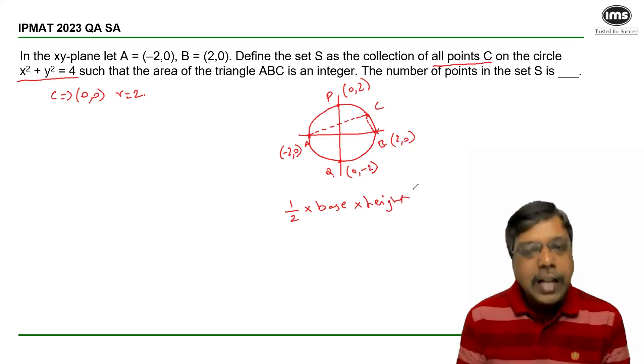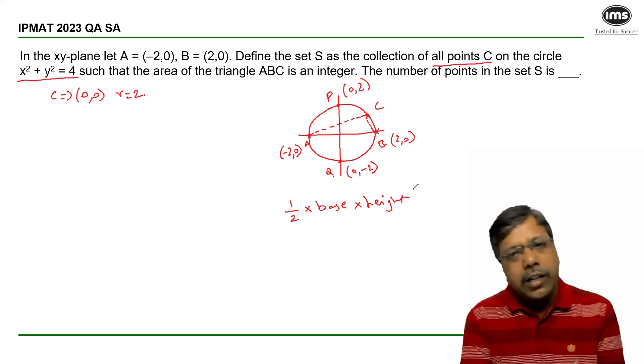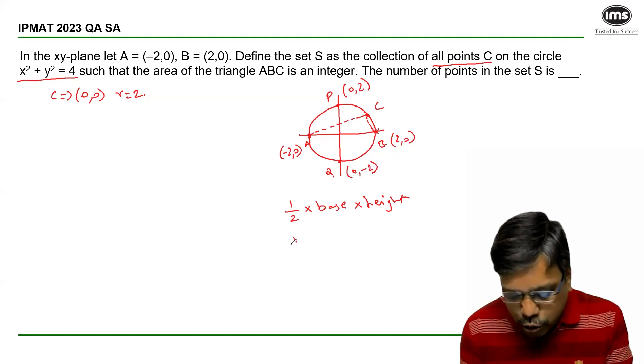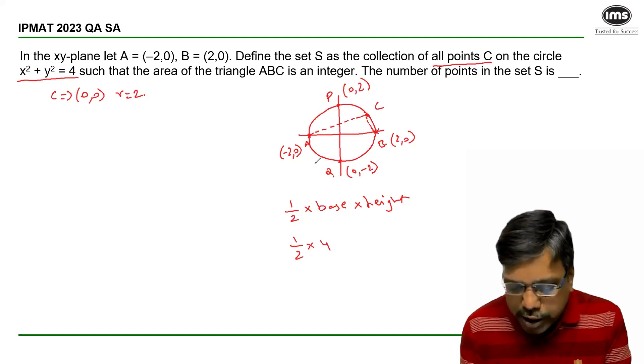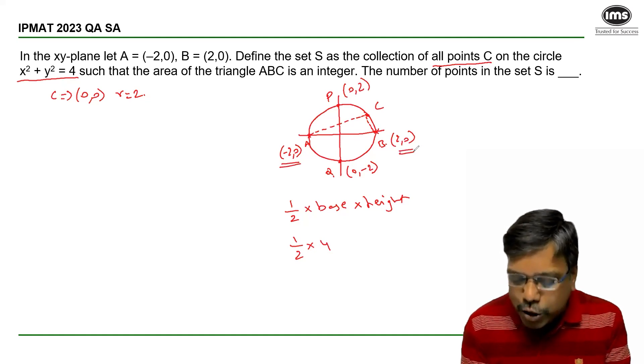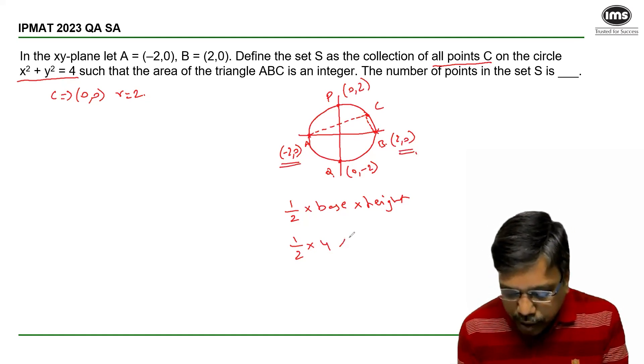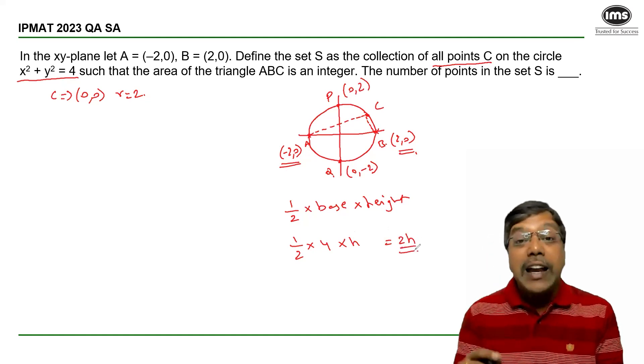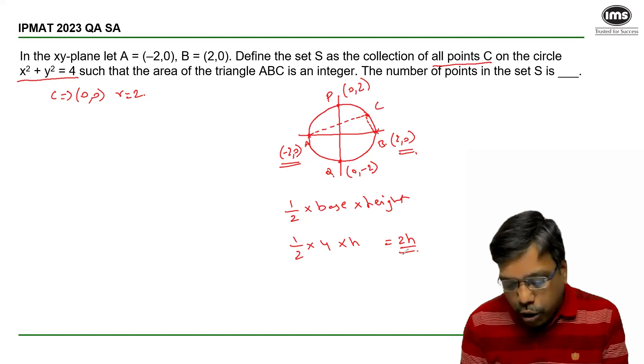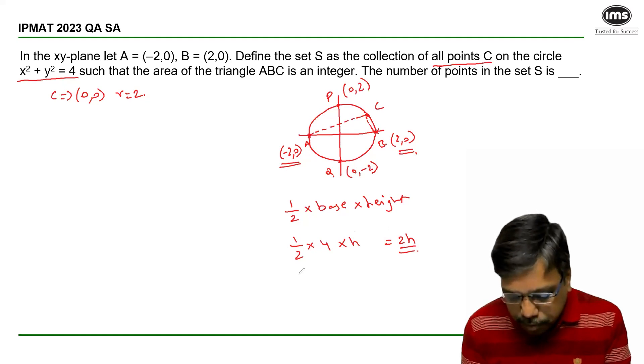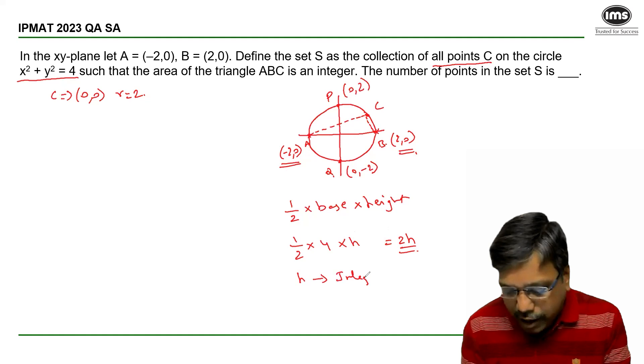So can I say the base of every triangle formed by A, B and C can be AB. So which means the base is 4 units because the distance between minus 2, 0 and 2, 0 is 4 units into height. So the area is 2H and I want this to be an integer. If I want 2H to be an integer, then H itself should be an integer or an integer value by 2.